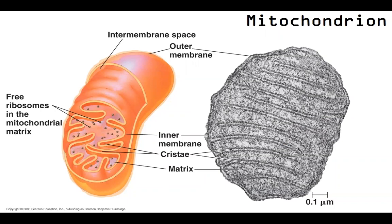Specifically, we're going to be looking at a lot of the machinery involved in the electron transport chain. Glycolysis is going to happen in the cytosol, the citric acid cycle in the interior, and then the electron transport chain is really connected to this enfolding — these cristae.